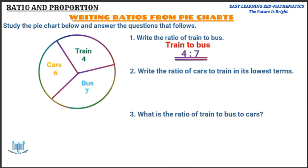Question number two: we are asked to write the ratio of cars to train in its lowest terms. So I'm going to write the statement: cars to train. Under the segment of cars we have got six, so I'm going to write six. The number of train is four. So we're going to put six to four. We have come up with the ratio of cars to train, which is six to four.